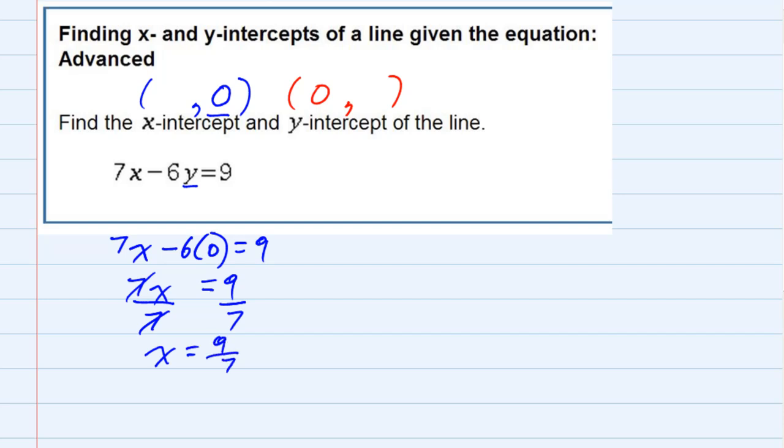So that's my x value, 9/7. It's very similar to find the y-intercept. This time the x value is 0. So I'm going to rewrite the x value as 0, and I would have 7 times 0 minus 6y equals 9.